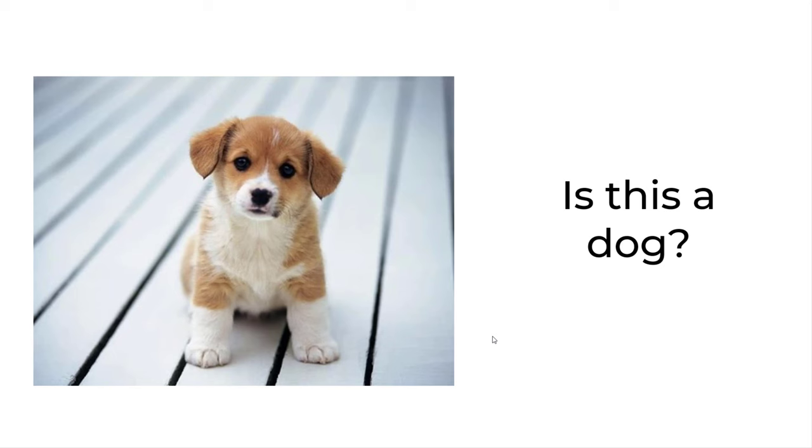In computer vision, image classification is not the only problem that we try to solve. There are two other problems that we solve using computer vision, which are object detection and image segmentation. In this short video, I will explain the difference between these three using a simple example.